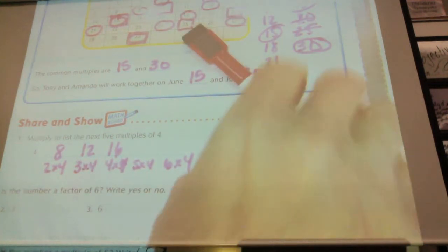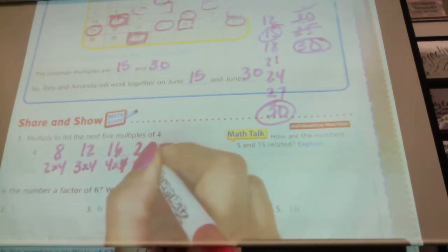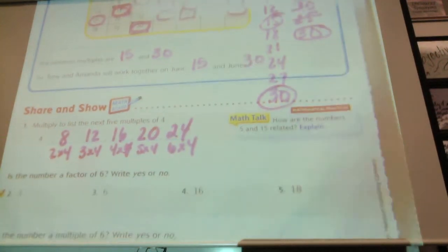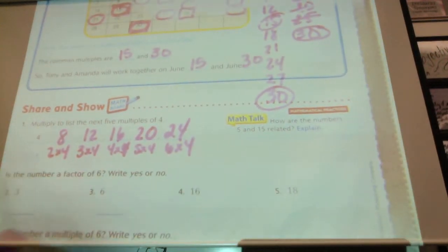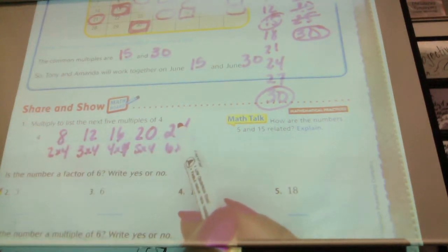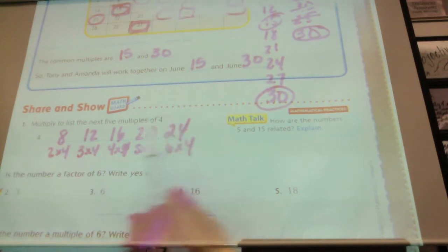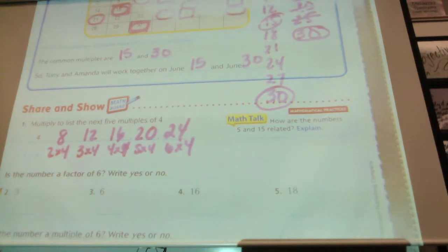What came after 16, everybody? Twenty. And then? Twenty-four. So, those are all the multiples. Multiples is when you multiply it by the next number, and then the next number. Factor is when you break it down into smaller groups, smaller numbers to multiply together to make your part.